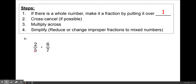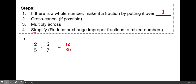Step 2: cross-cancel if possible. We can't cross-cancel here, and I'll explain more about that in a moment. Step 3: multiply straight across. So we multiply 2 and 6, which is 12, and then 5 and 7, which is 35. You're multiplying the numerators straight across, then the denominators. Unlike adding and subtracting, you do not need a common denominator. Finally, you simplify — reduce or change improper fractions to mixed numbers. In this case it's a proper fraction, so that's our final answer.